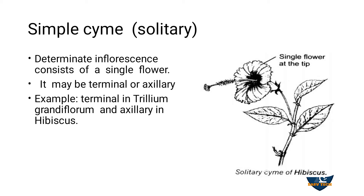Solitary means alone. In the determinate inflorescence, that is in cymose inflorescence, it has only one flower, that is a single flower. Whether it can be present at the terminal — this is the tip region — or at the angle of the leaf. If it arises like that, it is called terminal inflorescence or axillary inflorescence. For terminal, Trillium grandiflorum is the example. For axillary, it is Hibiscus.